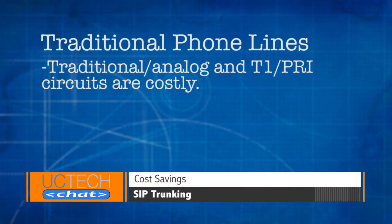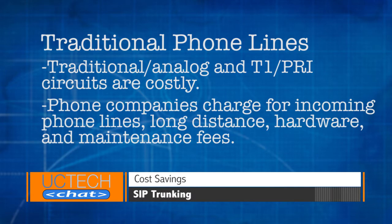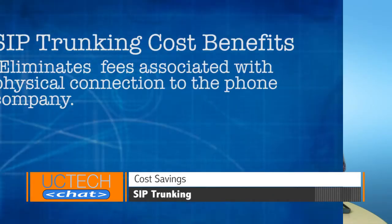So let's talk about the cost savings that SIP Trunking can provide. Your company is probably dealing with an expensive PBX with traditional phone lines that are expensive as well, and you're still stuck with old communication technology. Typically, traditional circuits like analog or T1 PRI are costly. Charges for incoming phone lines, long distance, hardware, and maintenance fees also apply. Many of those costs can be drastically reduced or eliminated by using a SIP Trunking provider.